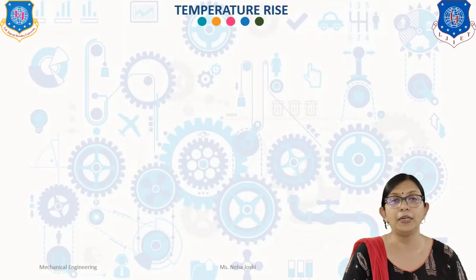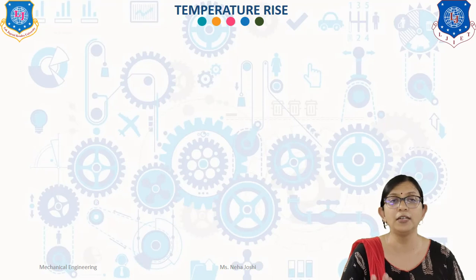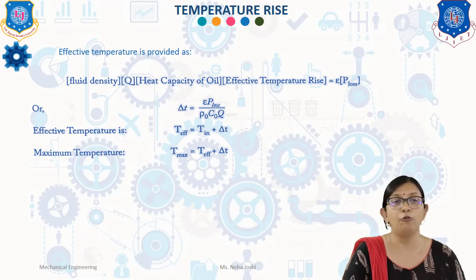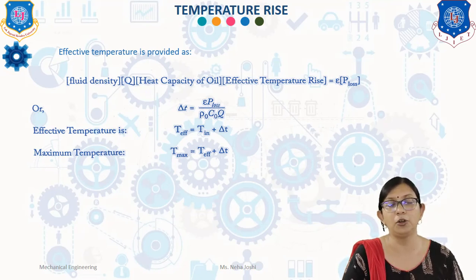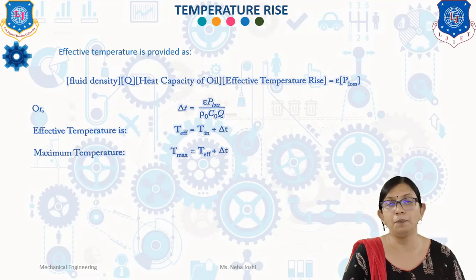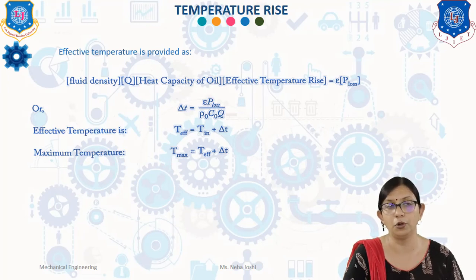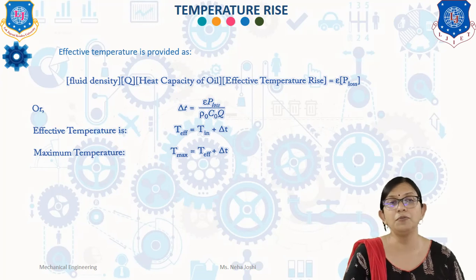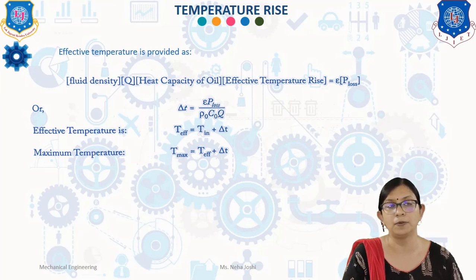Finally, temperature rise in squeeze film lubrication: the effective temperature rise ΔT is given by ΔT = E_powerloss / (ρ₀·C₀·Q). The effective temperature is T_effective = T_initial + ΔT, and the maximum temperature is T_max = T_effective + ΔT. By these equations we can find both effective and maximum temperature rise in squeeze film lubrication.